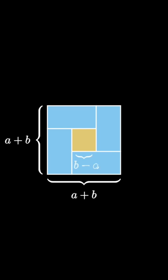These four rectangles can be organized to fit inside of an a plus b by a plus b square, however there's a missing interior square with a side length of b minus a.